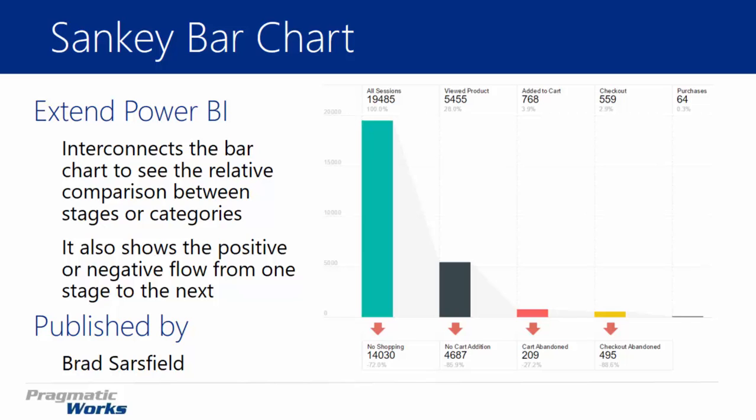What this visual does is interconnect the bar charts. You can see the gray area in the middle between the bar chart sections, where there's a gray interconnection showing a comparison between the different stages or categories of values. It also allows you to show a positive or negative flow from one stage to the next, taking the difference between each stage and representing it on the bottom. The values on the bottom are the difference between the stages on the top, and you'll also see a percent difference shown as well.